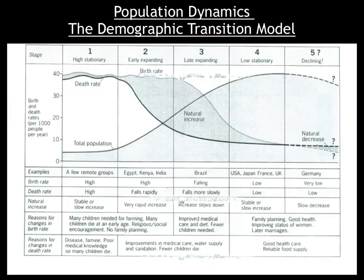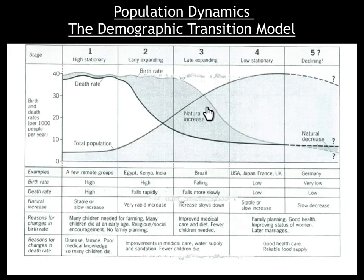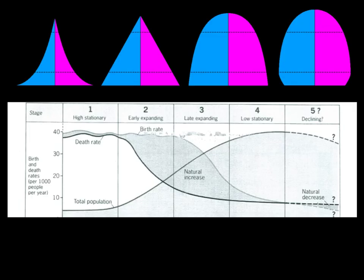A few main points to note: this line represents the total population, you have the death rate and the birth rate. The section between stage two and stage three — the early expanding and the late expanding — where we've got natural increase, is going to become quite important later on. The demographic transition model also links in relatively nicely with some of the population pyramids that we have seen and will see.